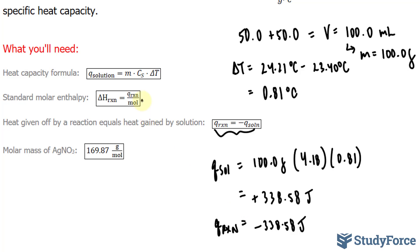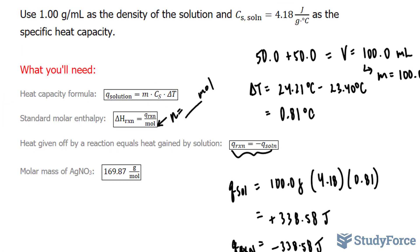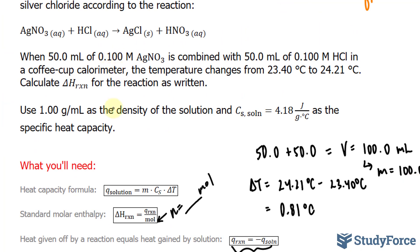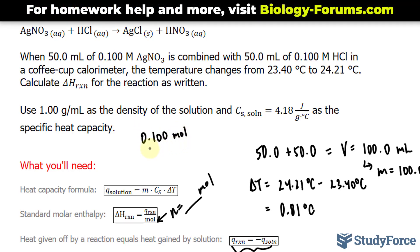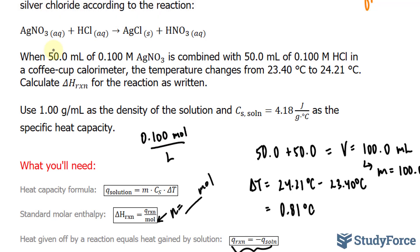To find the moles of AgNO3, I take its molarity, which is 0.100 M, or 0.100 moles per liter, and multiply by the volume. The volume is in milliliters, so we need to convert to liters. I'll take 50.0 milliliters and multiply by 1 liter over 1,000 milliliters. The milliliter units cancel out, and liters cancel out, leaving us with moles of AgNO3.